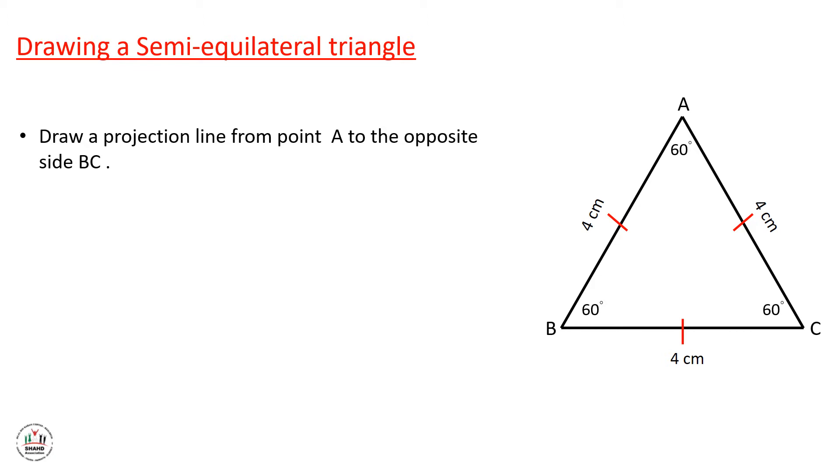What do we mean by semi-equilateral triangle? In simple words, semi-equilateral triangle with equal sides and equal angles. Let's take a half of it, which we call a semi-equilateral triangle.